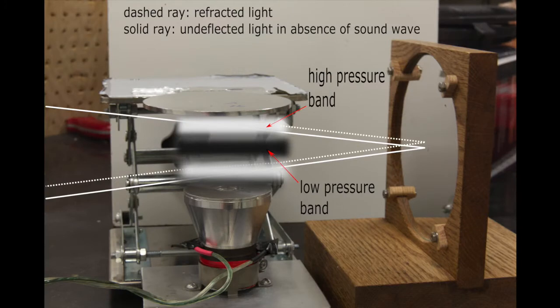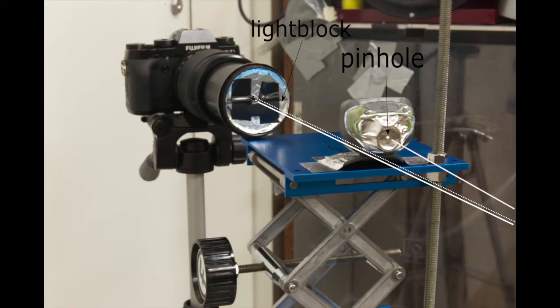When the light goes through the standing wave and is bounced back by the mirror, the light is refracted. This is because of the presence of high and low pressure bands. The refractive index of air changes vertically causing the light to refract. When the light reaches the light stop, most of the light is blocked and only allows the refracted light to go through and reach the sensor.